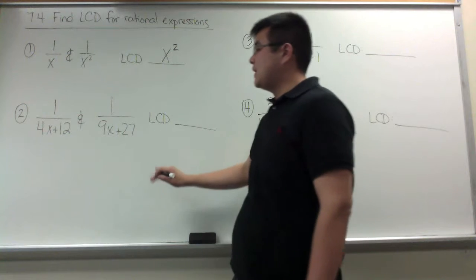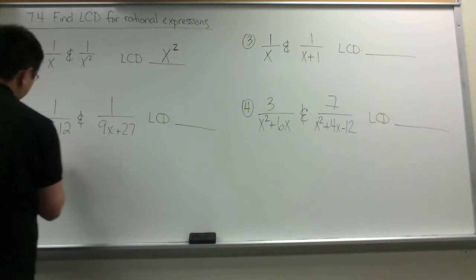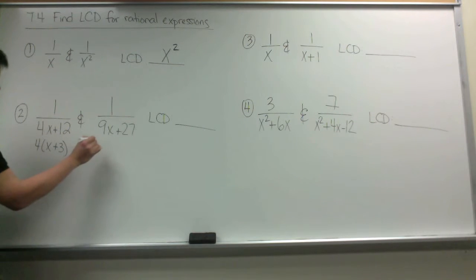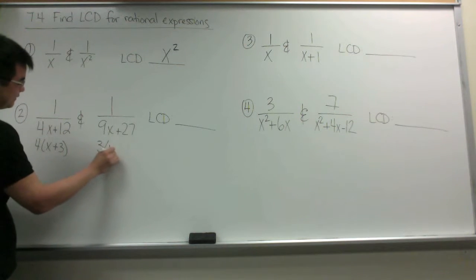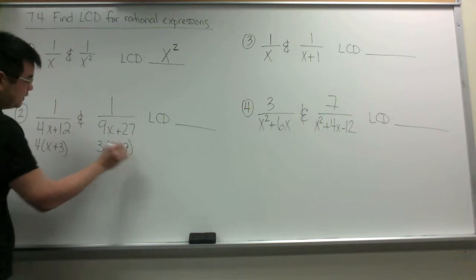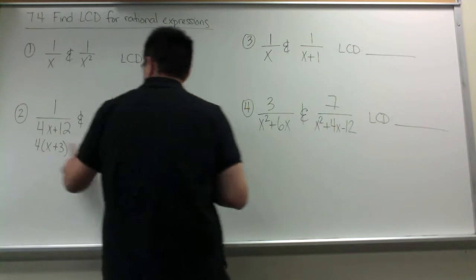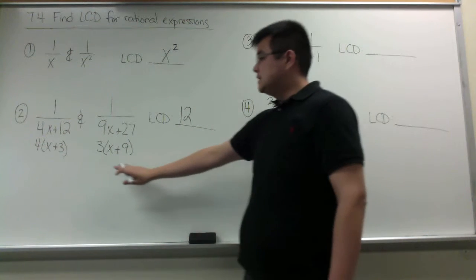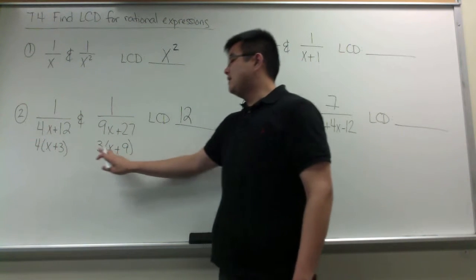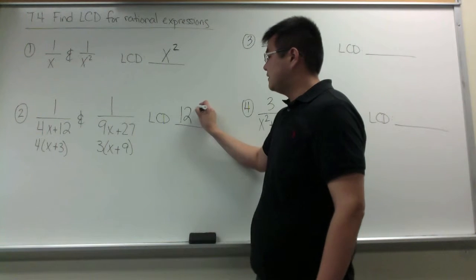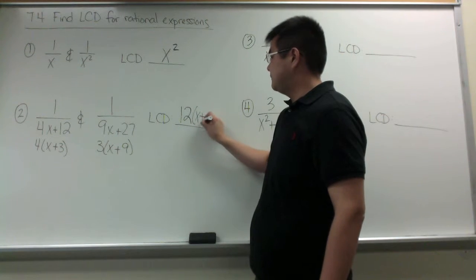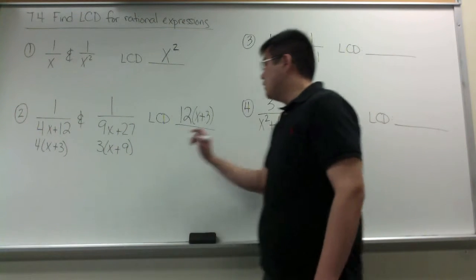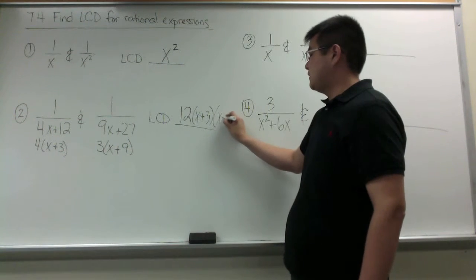In our second example we have to factor the denominators. We are going to factor out the GCF, which is 4. Then factor the GCF from the other denominator, which is 3. We are going to compare the numbers 4 and 3 — the LCD between 4 and 3 is 12. Since each binomial is not in the other denominator, both binomials automatically go into the LCD.